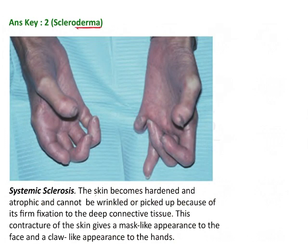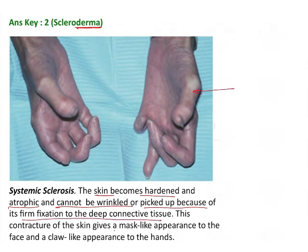The word 'derma' in scleroderma is a giveaway because the skin is also affected along with the joint. The skin becomes hardened and atrophic, and cannot be wrinkled or picked up because of firm fixation to the deep connective tissue. The skin is very stiff and rubbery. This contracture of the skin gives a mask-like appearance to the face and a claw-like appearance to the hands.